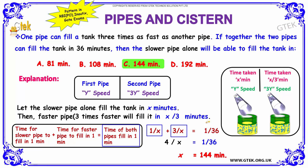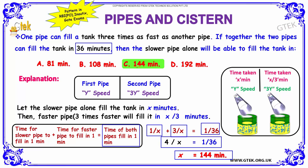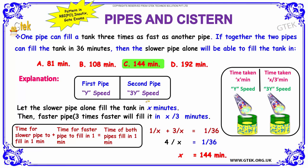Since the two pipes together fill the tank in 36 minutes, in one minute they fill 1/36 parts. Summing up: 1/x + 3/x = 1/36, giving 4/x = 1/36. Cross-multiplying, x = 4 × 36 = 144 minutes. Hence the slower pipe alone takes 144 minutes to fill the tank, so the answer is option C. This pattern of questions appears in RBI, NR text, and GATE exams.